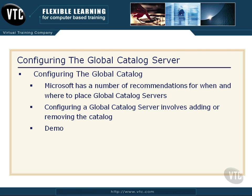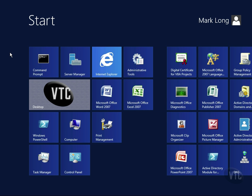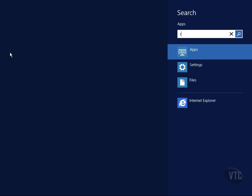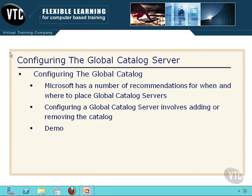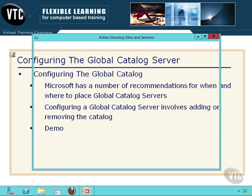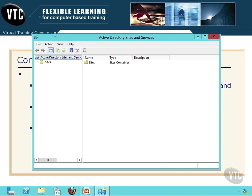Let's do a little demo. To add or remove a Global Catalog, I need to open Active Directory Sites and Services. I'm going to press the Windows key to jump out to the Start menu, and I'm just going to type Run, and that will search for the Run app. I will type D-S-S-I-T-E dot M-S-C and press Enter, and it should open up Active Directory Sites and Services. And there we go — Active Directory Sites and Services.